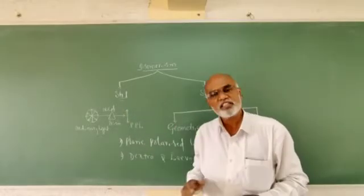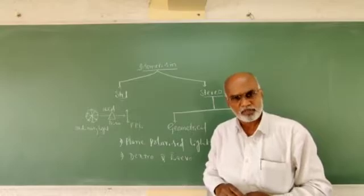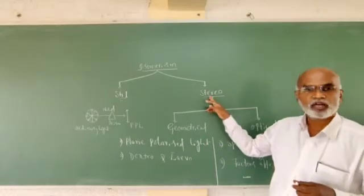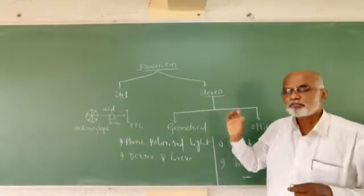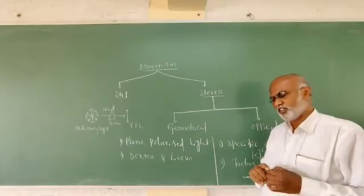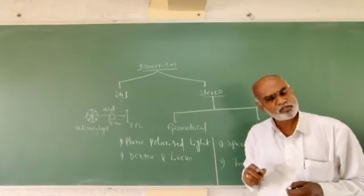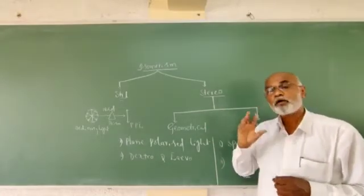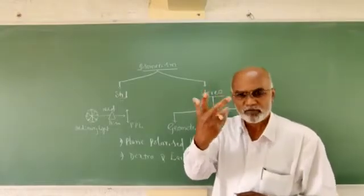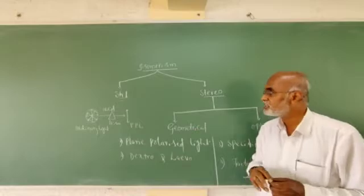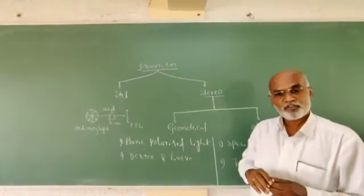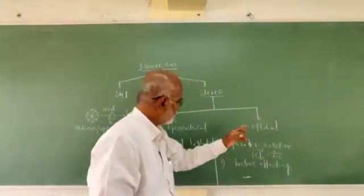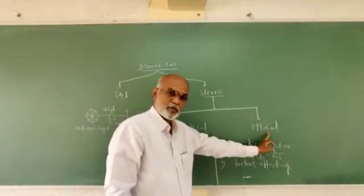We learnt in detail about structural isomerism in our previous classes, so today's discussion is purely confined to stereoisomerism. The simple definition: stereoisomers are compounds with the same molecular formula, same chemical composition, same structural formula, but differing in the spatial arrangement of atoms or groups in three-dimensional space. Such stereoisomers are again classified into two types: geometrical isomers and optical isomers.